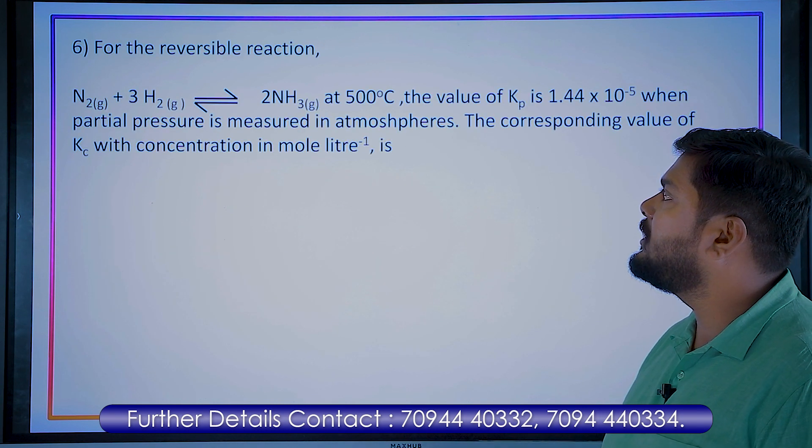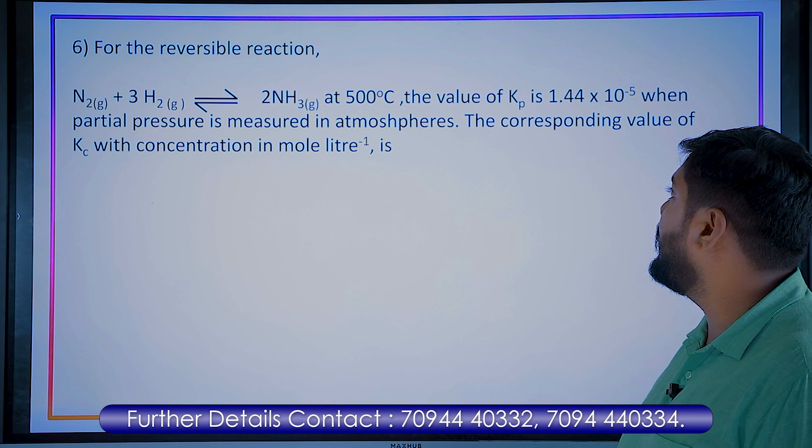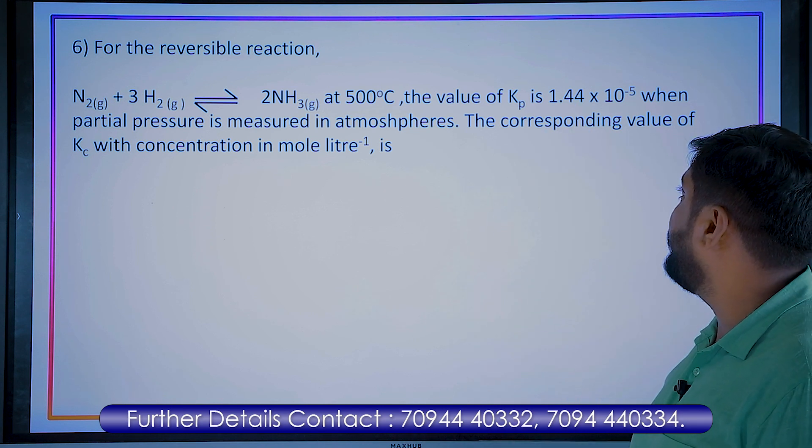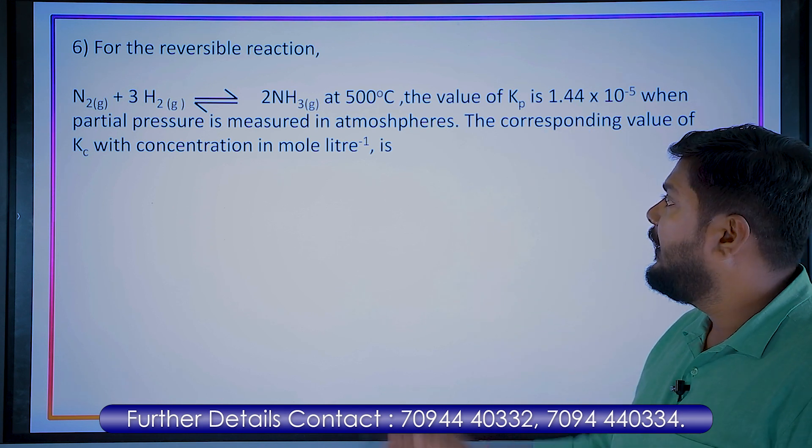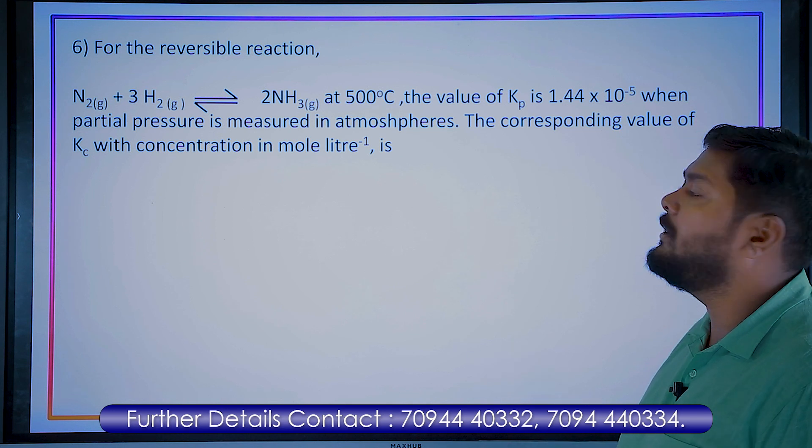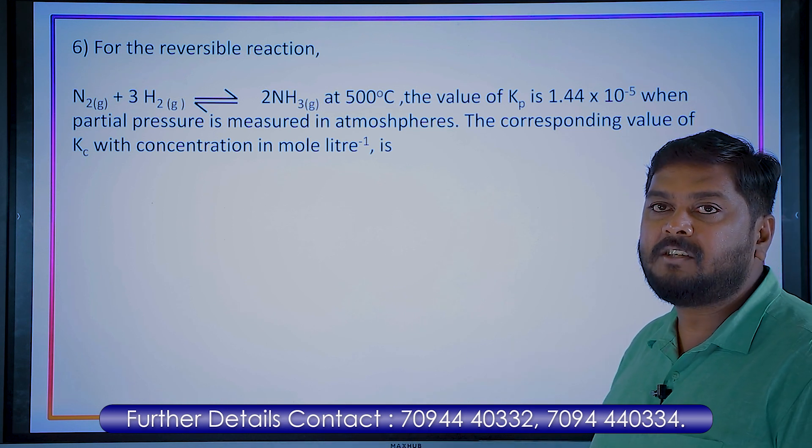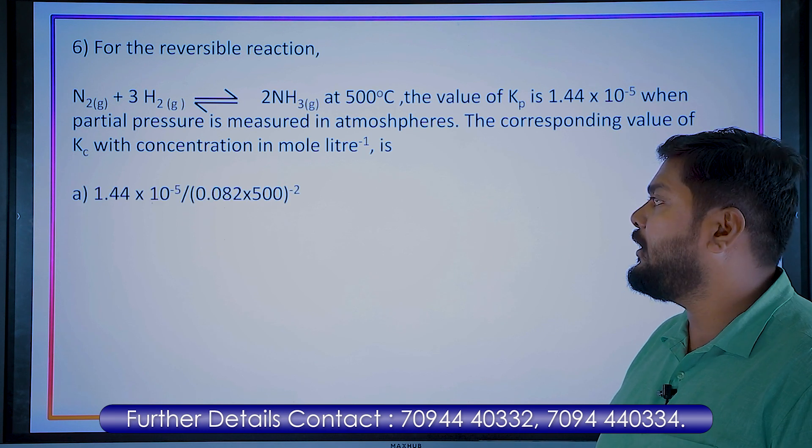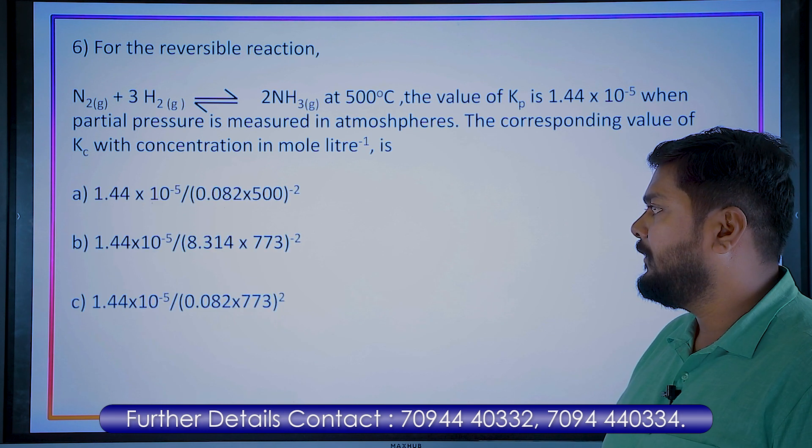The sixth question: for the reversible reaction, formation of ammonia, the Kp is given as 1.44 times 10 to the power minus 5 when partial pressure is measured in atmospheres. The corresponding value of Kc will be what? Same formula: Kp equals Kc times RT to the power delta n.